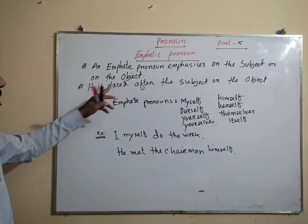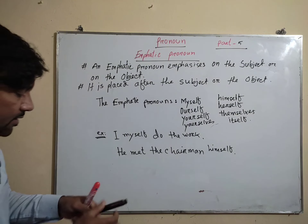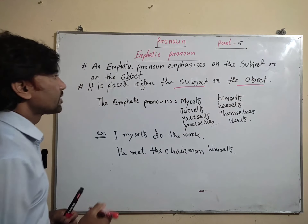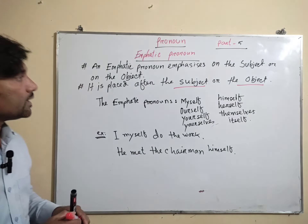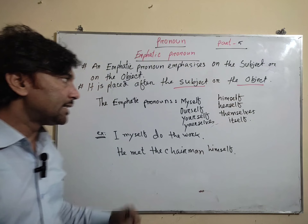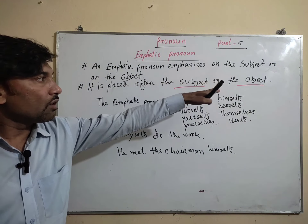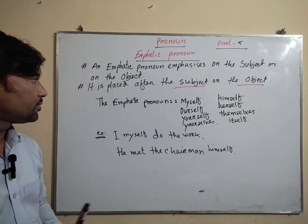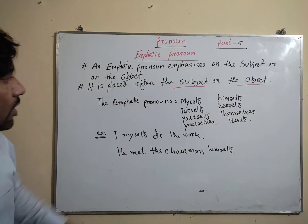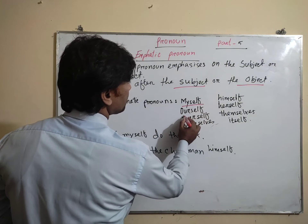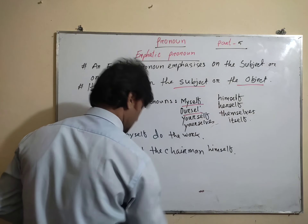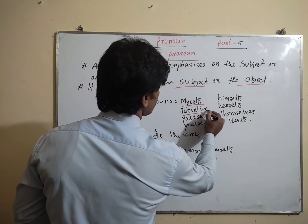An emphatic pronoun is placed after the subject or after the object, and it emphasizes on the subject or on the object. What are the emphatic pronouns? The emphatic pronouns are: myself, ourselves, yourself, yourselves.